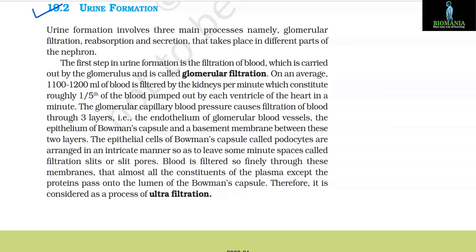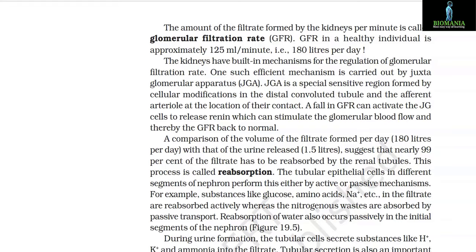The glomerular capillary blood pressure causes filtration of blood through three layers: the endothelium of glomerular blood vessels, the epithelium of Bowman's capsule, and a basement membrane between these two layers. The epithelial cells of Bowman's capsule, called podocytes, are arranged to leave minute spaces called filtration slits or slit pores. Blood is filtered so finely through these membranes that almost all constituents of the plasma except proteins pass into the lumen of the Bowman's capsule, making it a process of ultrafiltration.